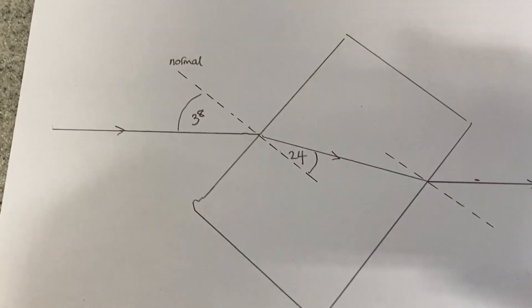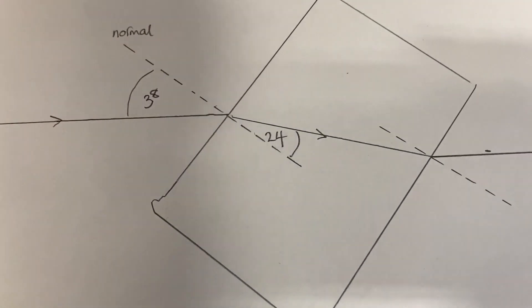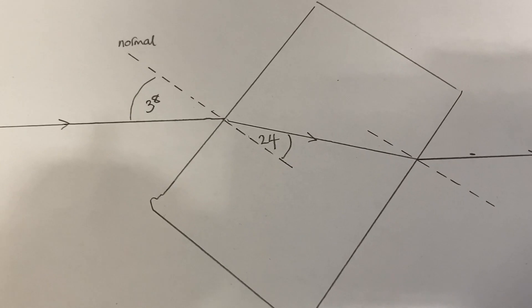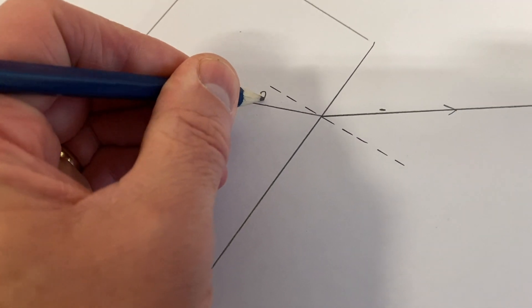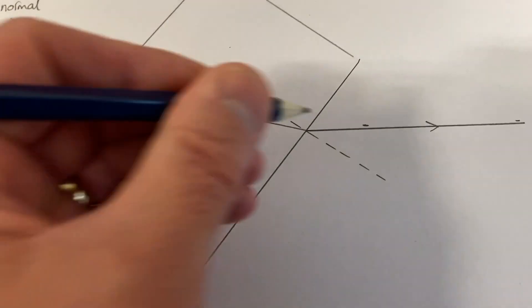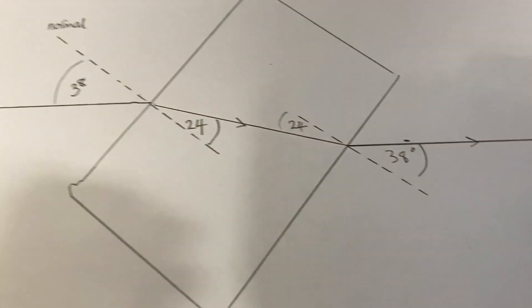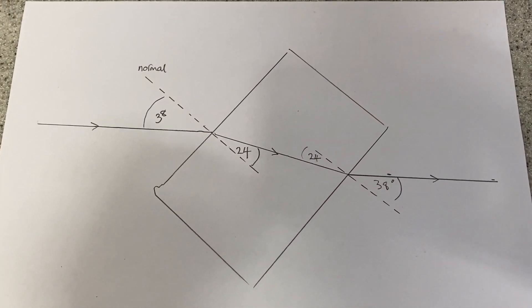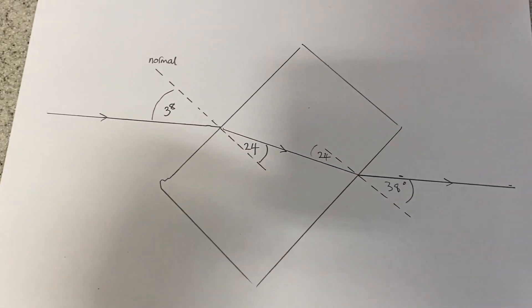As it goes from air into glass, the light bends towards the normal. The angle in the glass is smaller than the angle in the air. And if we measure those angles on the way back out again, it turns out that angle's 24, and that angle's 38. So it bends away from the normal on the way back out. That's refraction. It bends towards the normal in the glass, away from the normal on the way out of the glass.